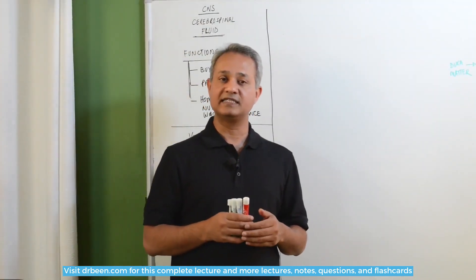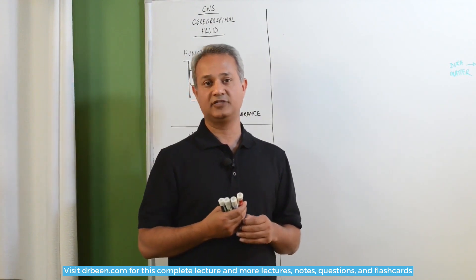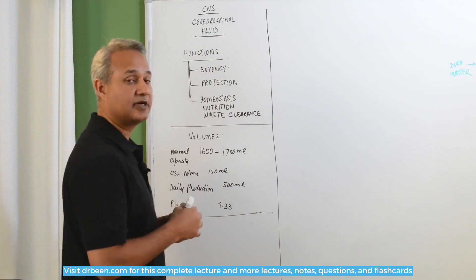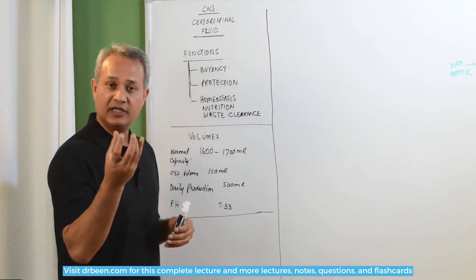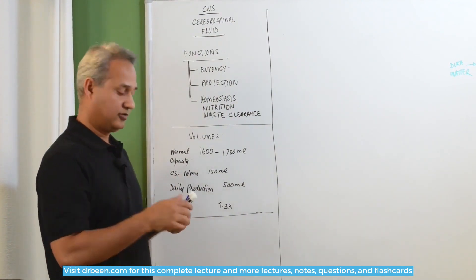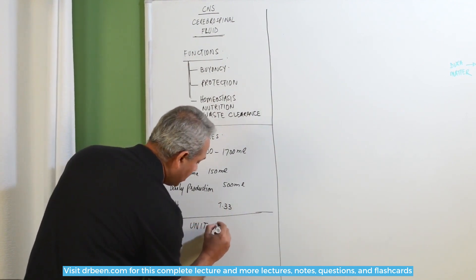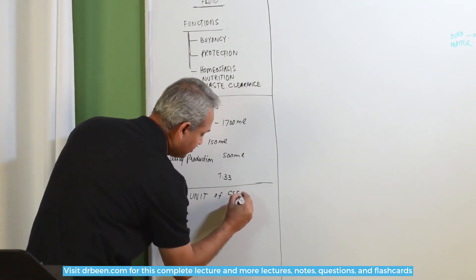Now let us talk about the blood CSF barrier and the production of the CSF. Before we start talking about that, first of all let us look at the unit that produces CSF. So, the unit of CSF production.